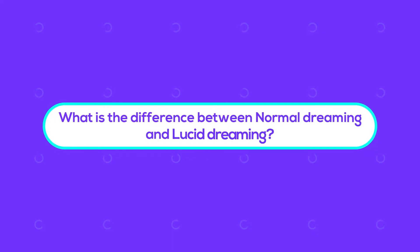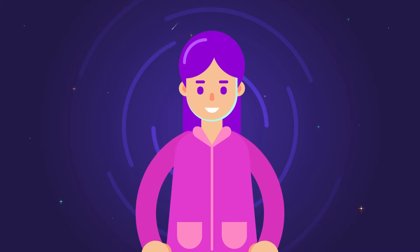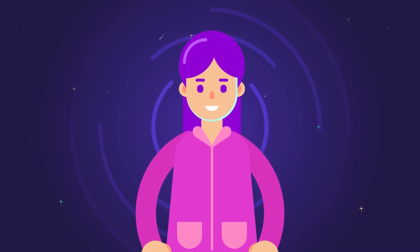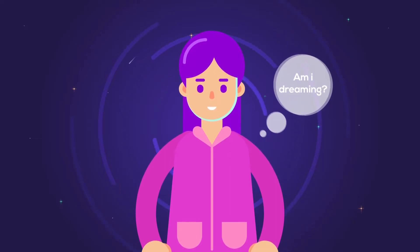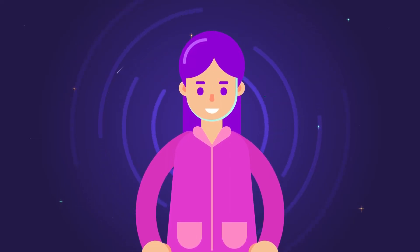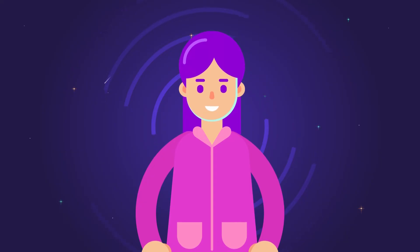So, what is the difference between normal dreaming and lucid dreaming? The first and most important difference is that the dreamer is conscious or aware that he is dreaming during lucid dreaming, while the dreamer is not conscious or aware that he is dreaming during normal dreaming.